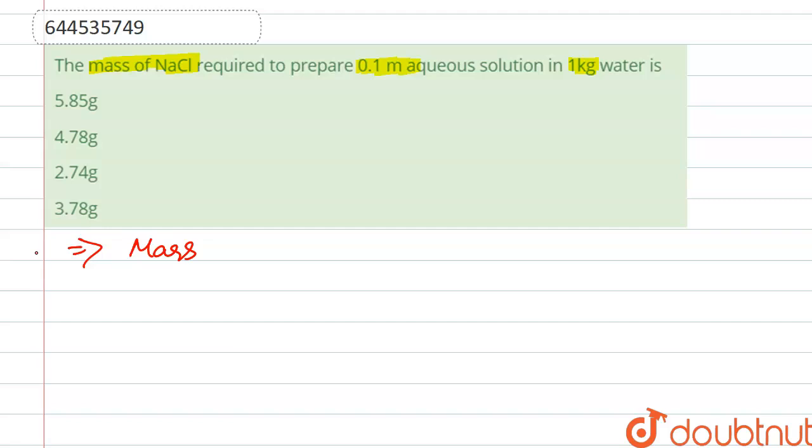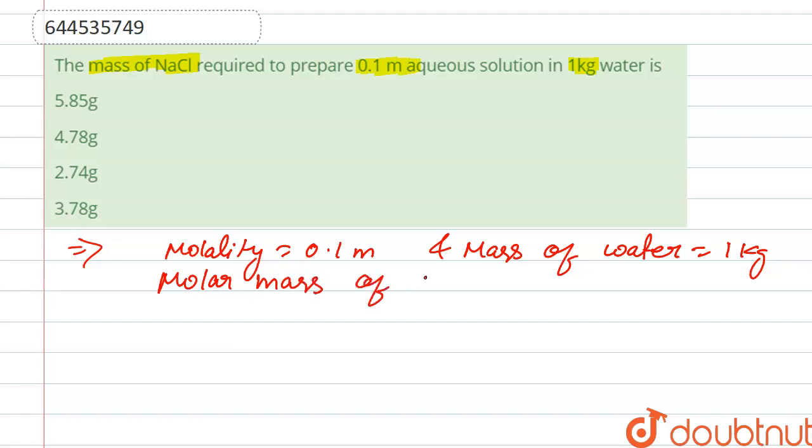Molality is given, that is 0.1 m, and mass of water is given, mass of water that is 1 kg.